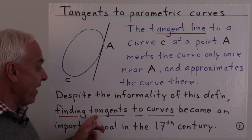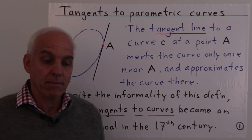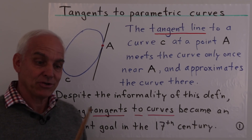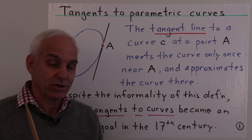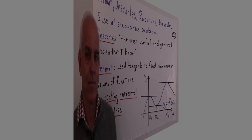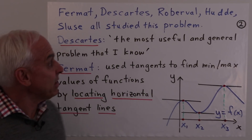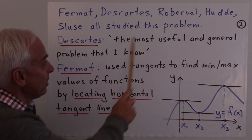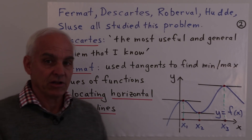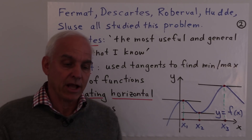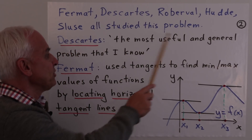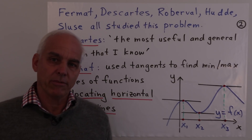Nevertheless, this problem of finding tangents to curves became a very big topic in the 17th century. People were actually interested in calculating or constructing tangents to curves. Quite a few illustrious people studied this problem, including Fermat and Descartes, Robert Waal, Hud, and Sluys. They all developed techniques for computing and calculating tangents. Descartes said that this was the most useful and general problem that he knew in the context of geometry.